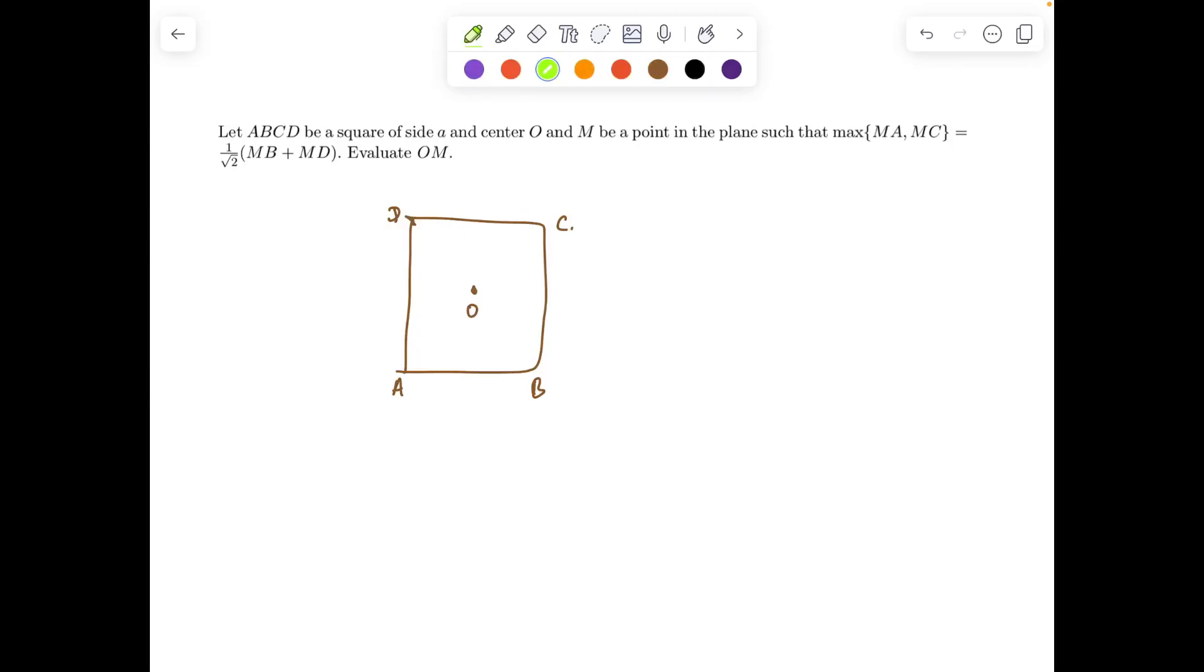Let M be an arbitrary point in the plane. The problem asks: the maximum distance between MA and MC is equal to (1/√2) times (MB + MD). This is (1/√2) times (MB + MD).